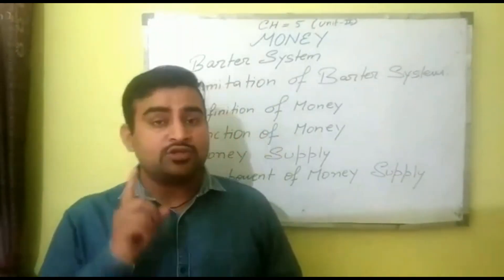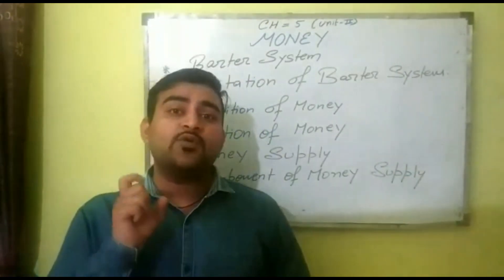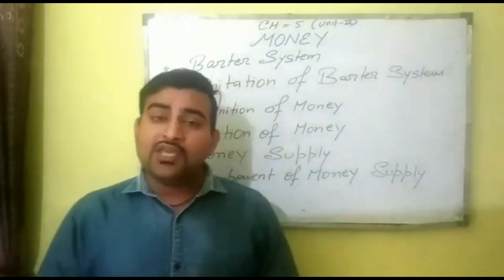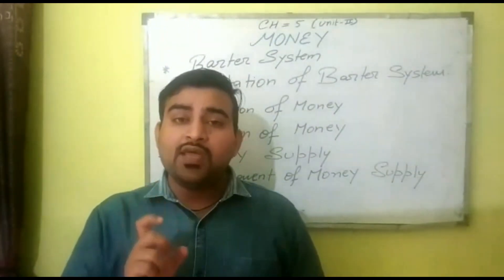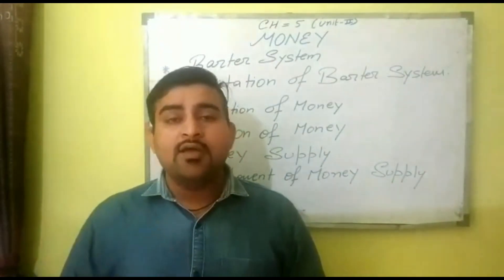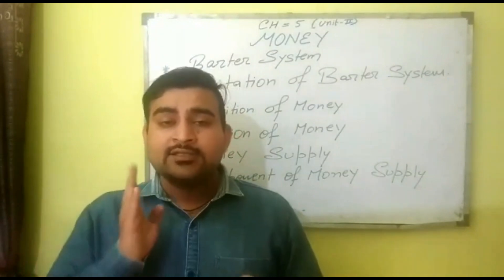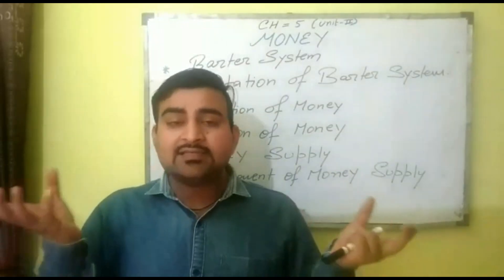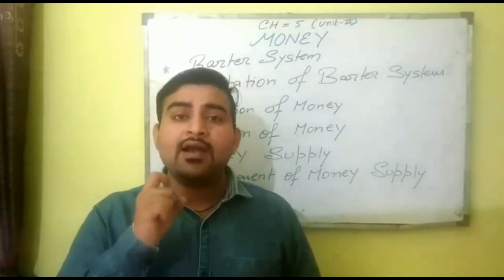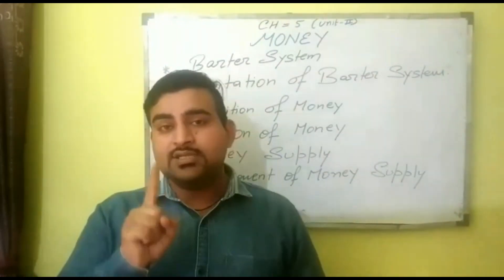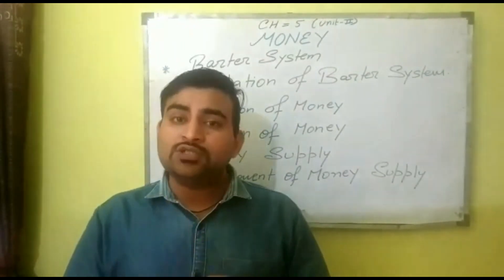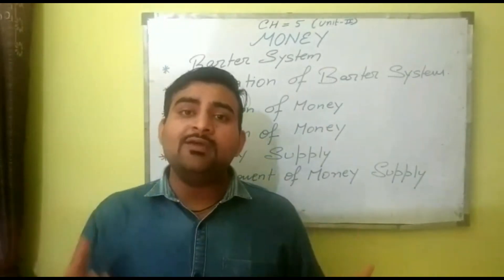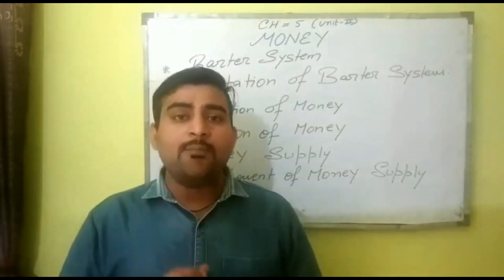CC economy exists only where there is double coincidence of want. Double coincidence of want means the simultaneous fulfillment of both the wants of buyer and seller. For example, jis ko chawal chahiye tha uske paas gaay tha, aur jis ko gaay chahiye thi uske paas chawal tha — jab dono ne commodity ko exchange kiya to dono ki want simultaneously fulfill ho gayi. This is barter system.